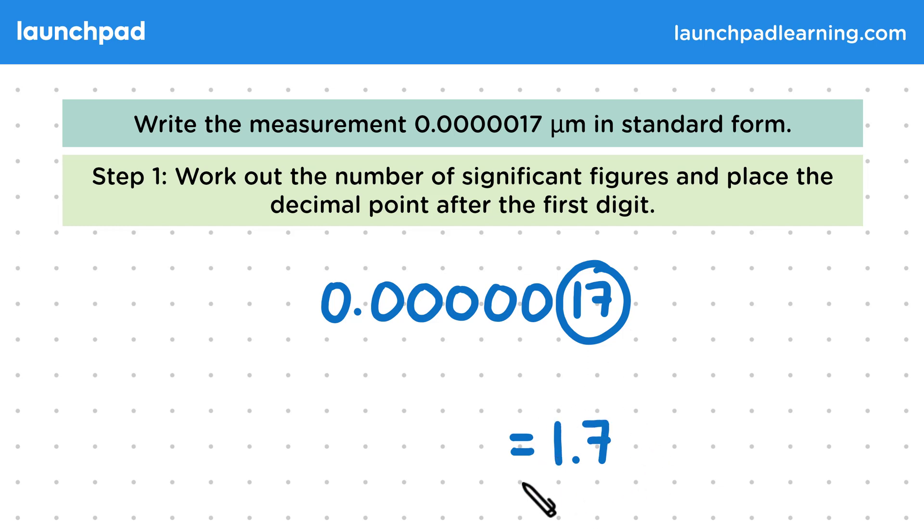Remember, this is 1.7 and not 17 because this value always needs to be equal to or greater than 1 and less than 10.